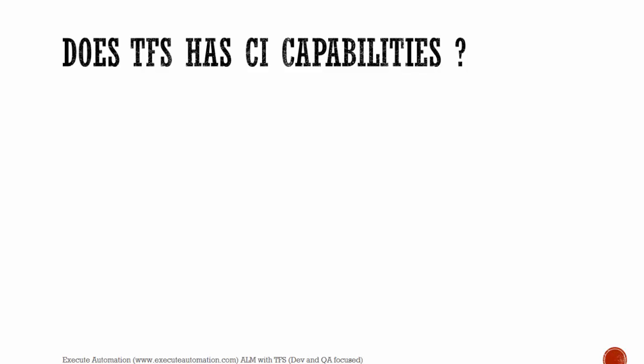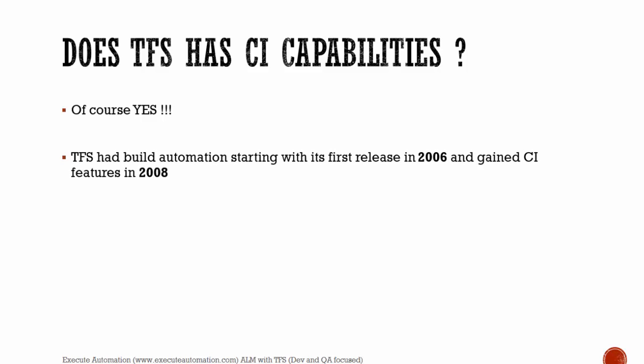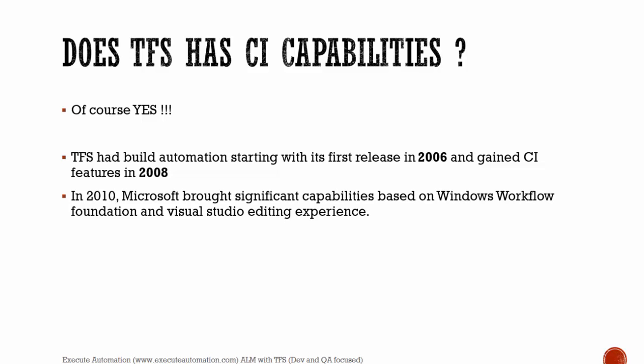Does Team Foundation Server have CI capabilities? CI is nothing but continuous integration, a system available in many different software on the market today, such as Jenkins, TeamCity, or even Maven. Yes, TFS has build automation starting with its first release in 2006 and gained CI features in 2008. In 2010, Microsoft brought significant capabilities based on Windows Workflow Foundation and the Visual Studio editing experience.